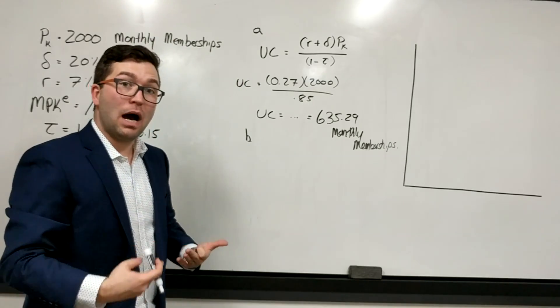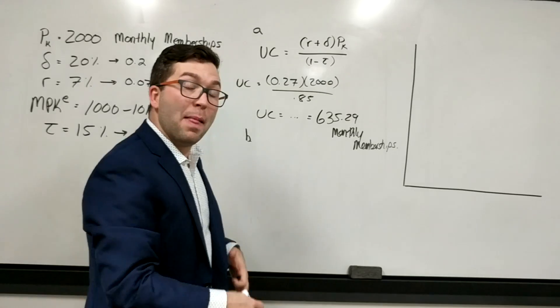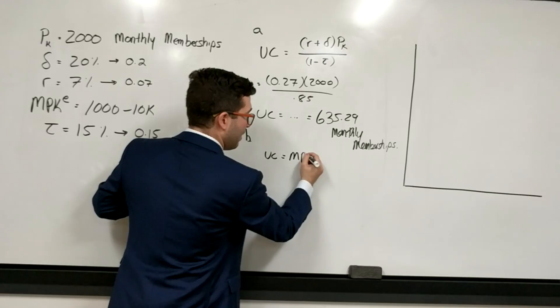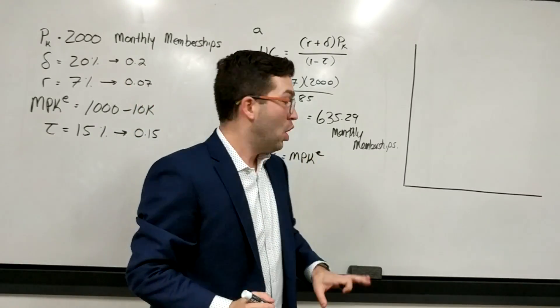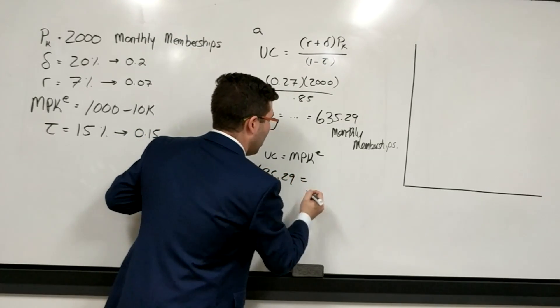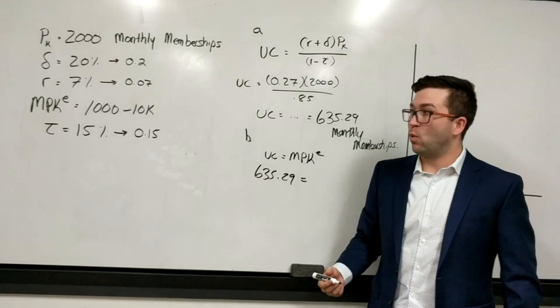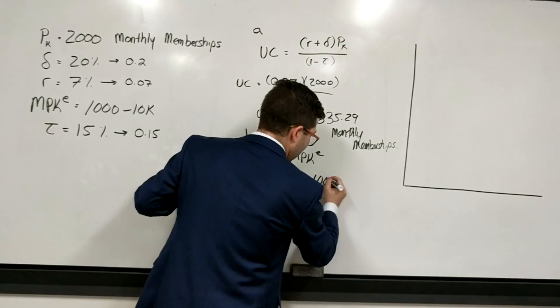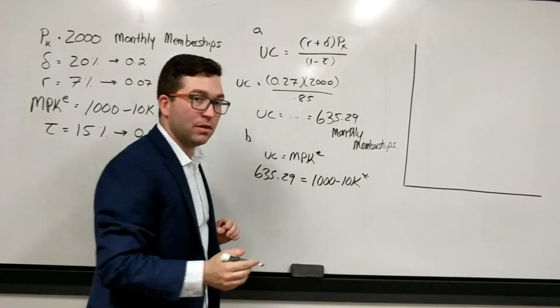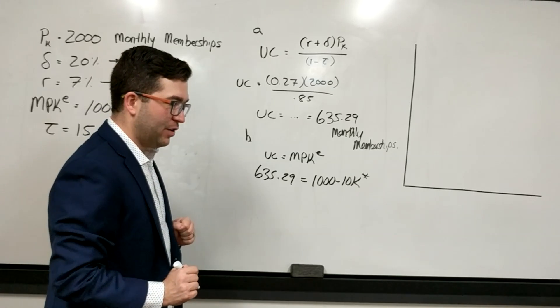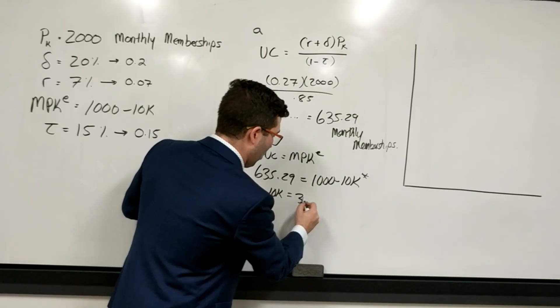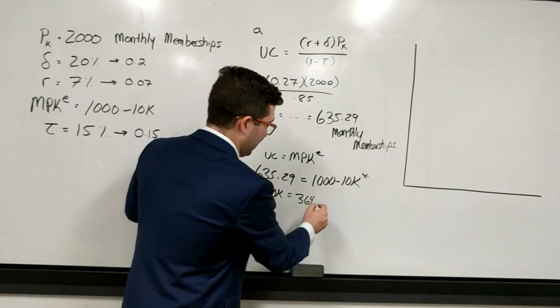For part B, it asks you to calculate the optimal level of capital that this firm should obtain, and that's where marginal benefit equals marginal cost. Our marginal cost is the user cost of capital. Our marginal benefit is our MPKE, or our expected marginal product of capital. We know our user cost of capital is 635.29. We know MPK is represented over here as 1000 minus 10K, and now we just have to solve for K, and that's going to be our K star, our optimal level of capital. So let's go ahead and do this. This is going to get us 10K equals 364.71.